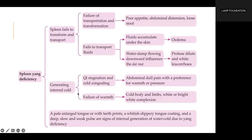A pale and plump tongue with or without teeth prints, a white and slippery coating, and a deep, slow, and weak pulse. This pattern is mainly caused by the further development of Spleen Chi Deficiency, by excessive intake of raw and cold food, by excessive intake of cold or cool medicines damaging the Spleen Yang, by Kidney Yang Deficiency failing to promote the spleen, or by insufficient Mingmen fire, leading to failure of generating fire in earth.